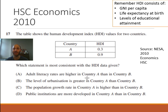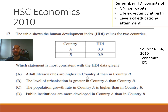This leaves us with answer C: population growth rate in Country A is higher than in Country B. This is the case because population growth rates tend to slow as countries become more and more developed. Less developed countries have higher population growth rates. So for Country A, which has lower levels of economic development, the population growth rate is likely higher in that country.